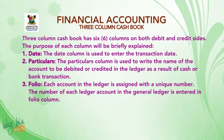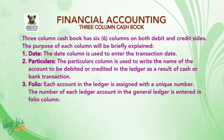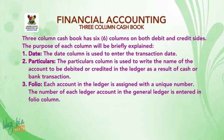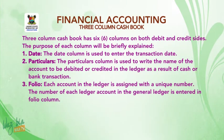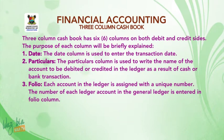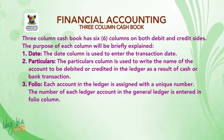Three column cash book has six columns on both debit and credit sides. The purpose of each column: Number one, date — the date column is used to enter the transaction date. Number two, particulars — the particulars column is used to write the name of the account to be debited or credited in the ledger as a result of a cash or bank transaction. Number three, folio — each account in the ledger is assigned a unique number, and that number is entered in the folio column.